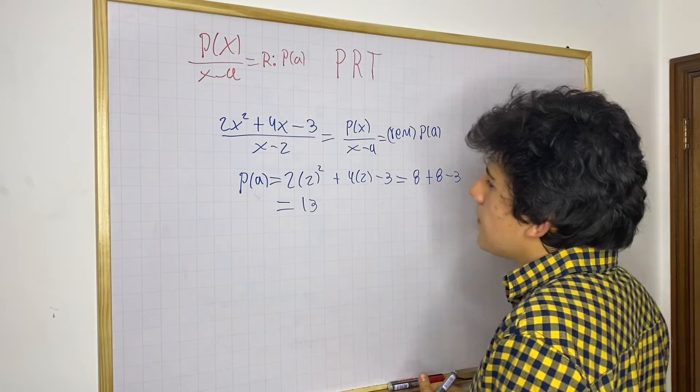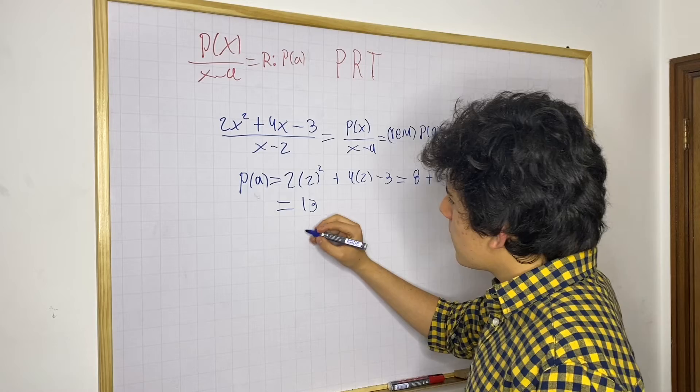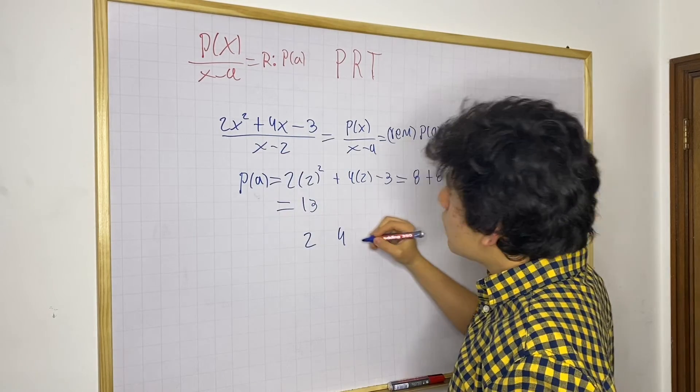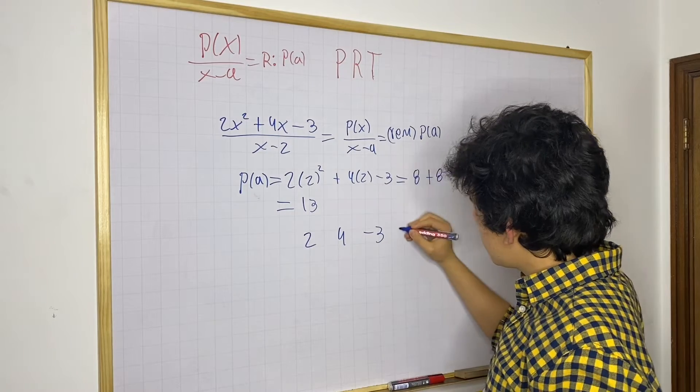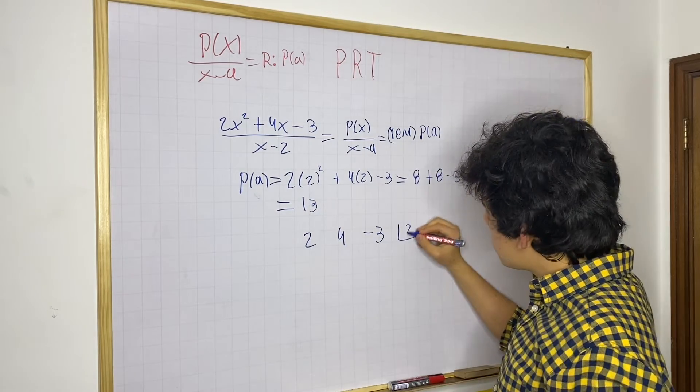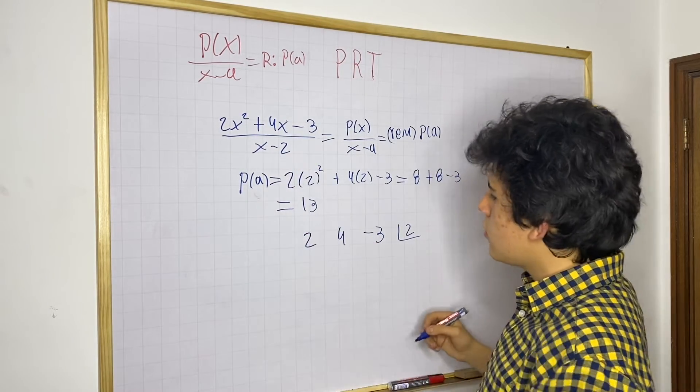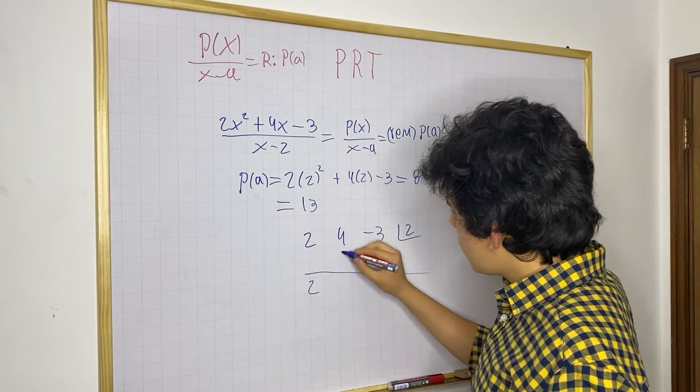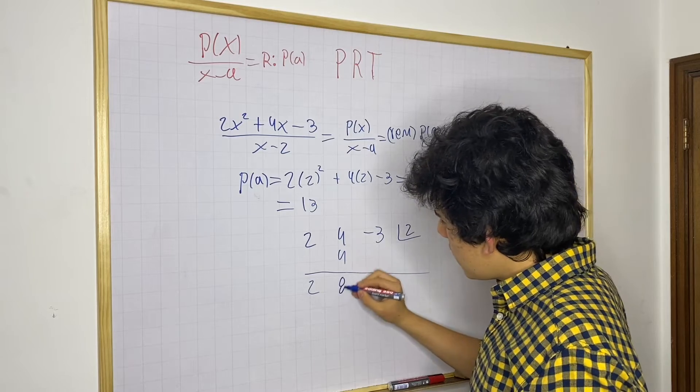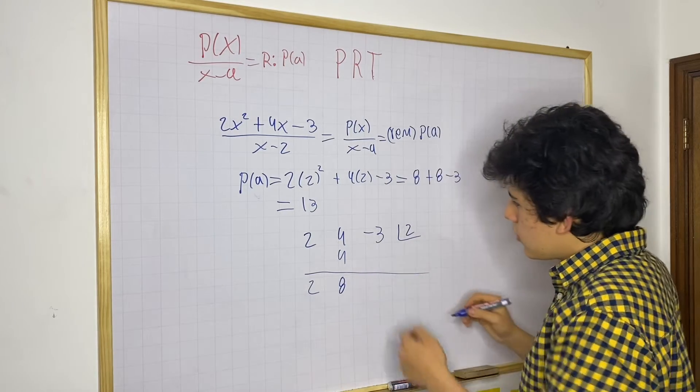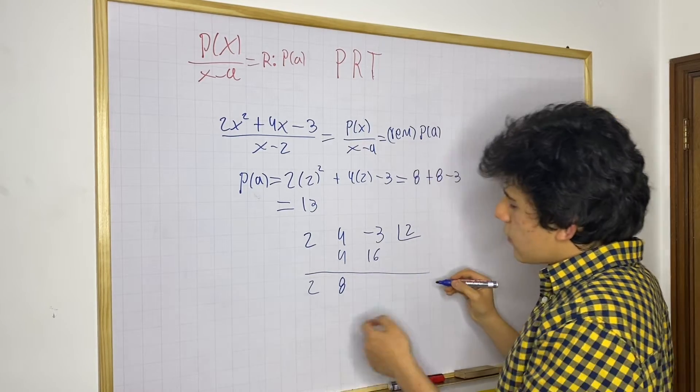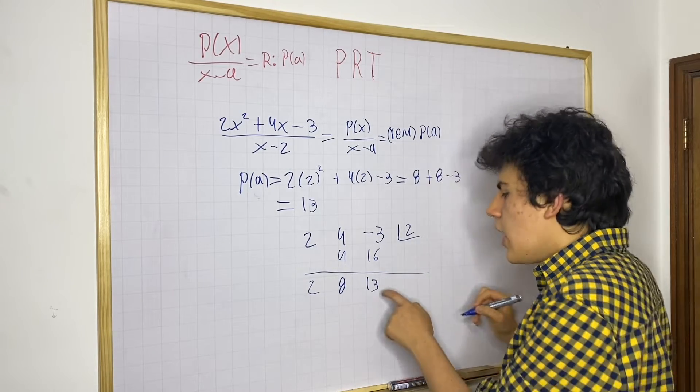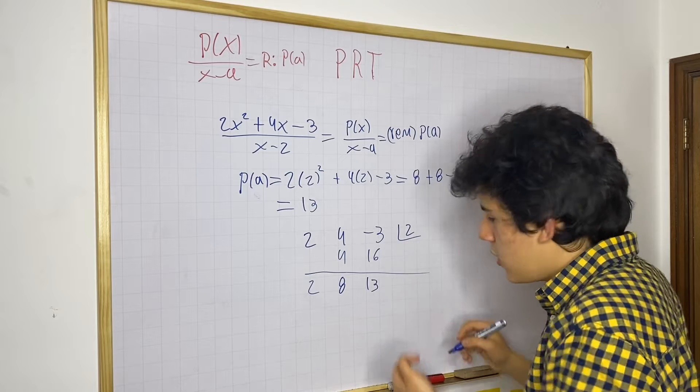Let's prove that by the synthetic division method. So for our coefficients, we have 2, 4, and minus 3. And then we get positive 2 in this case, remember you switch the sign. And let's see what we get. You get 2, so you get 4, it's going to be 8. You get 8 times 2, 16. And of course, you get 16 minus 3, that's going to be 13. Your third term is going to be your remainder.